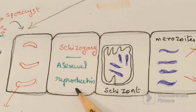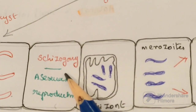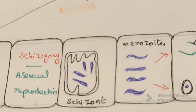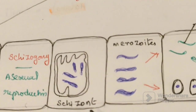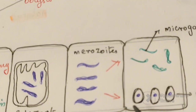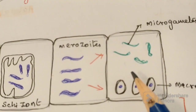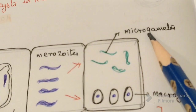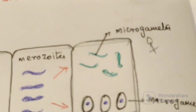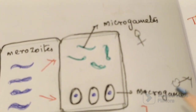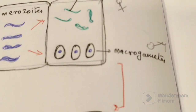The sporozoites undergo asexual reproduction, called schizogony, and develop completely into schizonts. Inside the schizont, merozoites are present. Once the schizont ruptures, the merozoites inside are released. These merozoites then develop into microgametes and macrogametes — micro meaning female, macro meaning male.